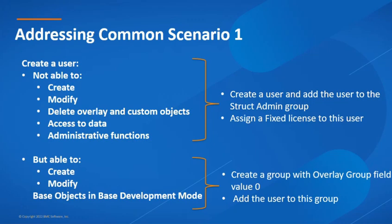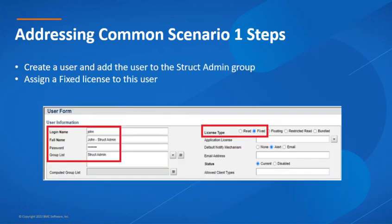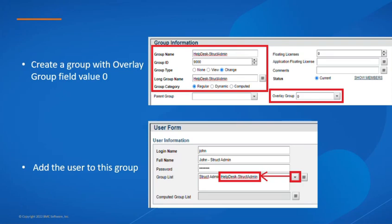We will now check a couple of scenarios where the different access types are applied. A common scenario is where we create a user who should not be able to create, modify or delete overlays and custom objects, access the data, or perform administrative functions. However, we want this user to be able to create and modify base objects in base development mode. To create this user: add the user to the struct admin group, assign a fixed license, then create a group with the overlay group field set to value 0, and add this user to the group.